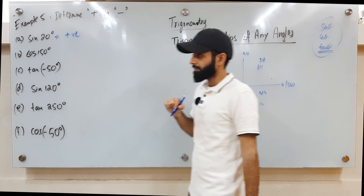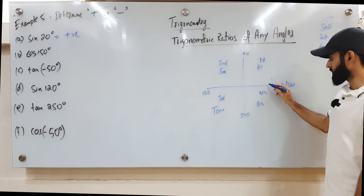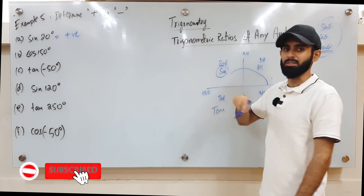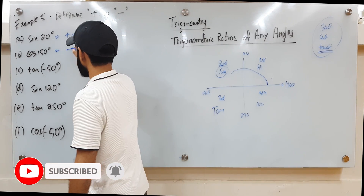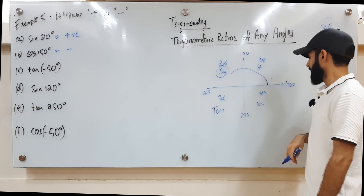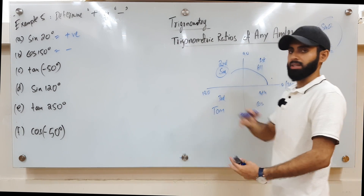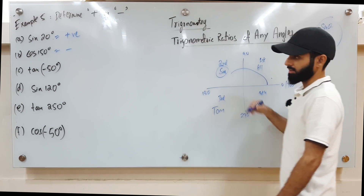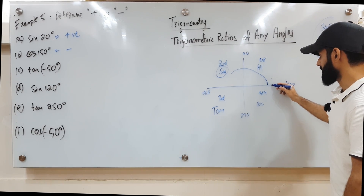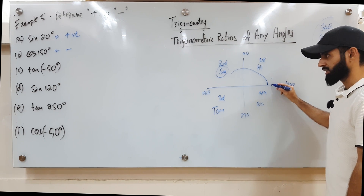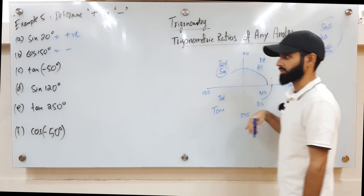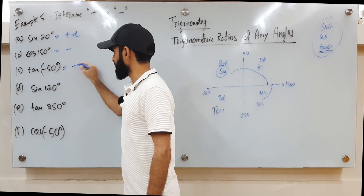Now cos 150: 150 takes us into the second quadrant, which is the home ground of sine. So cos is not welcome here — it's going to be negative. Now tan of negative 50: because of the negative, I move in a clockwise direction. Moving 50 degrees clockwise takes me into the fourth quadrant, so this is going to be negative.